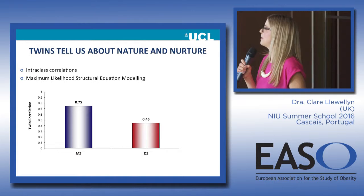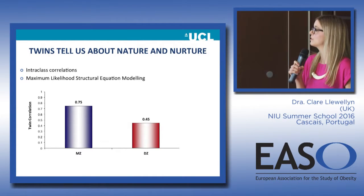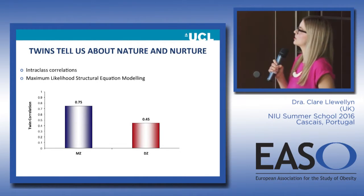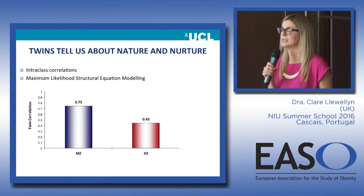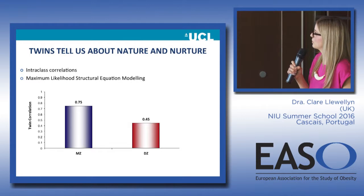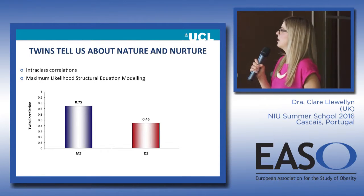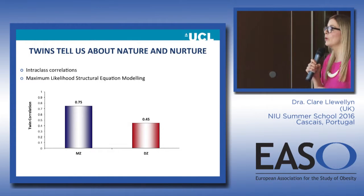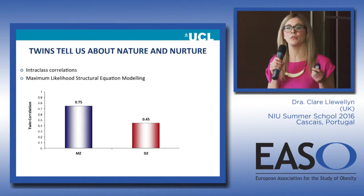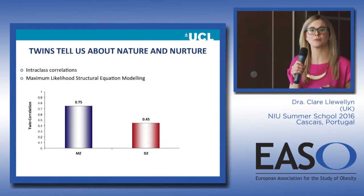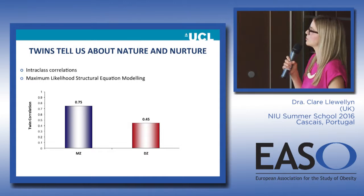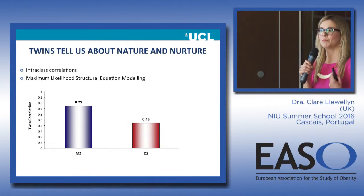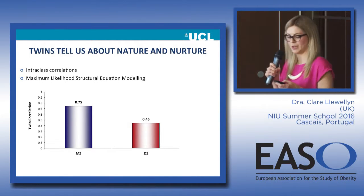The basis of the method is to correlate your identical twins and your non-identical twins and look to see if there's any difference in the resemblance between them. A typical example for human body weight shows an identical twin correlation of 0.75 and a non-identical twin correlation of 0.45 — a difference of 0.3. A quick way of estimating heritability is to double that difference, so 0.3 times 2 equals 0.6, indicating about 60 percent heritability. We use maximum likelihood structural equation modelling to derive more precise estimates, goodness of fit, and 95 percent confidence intervals.